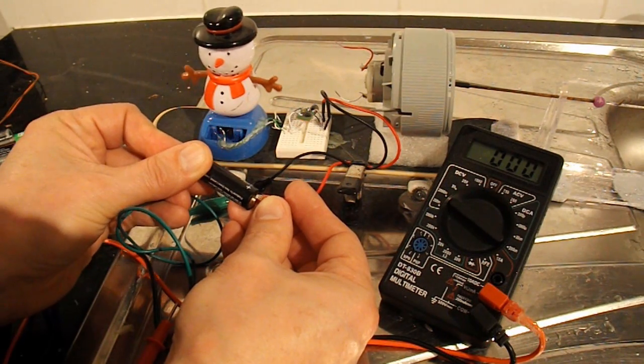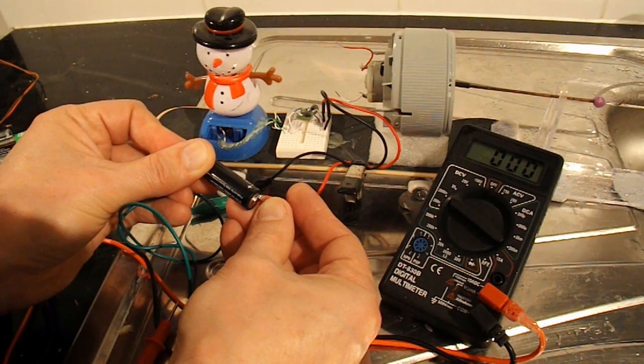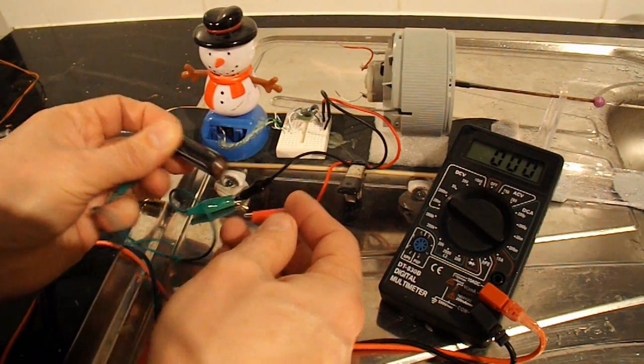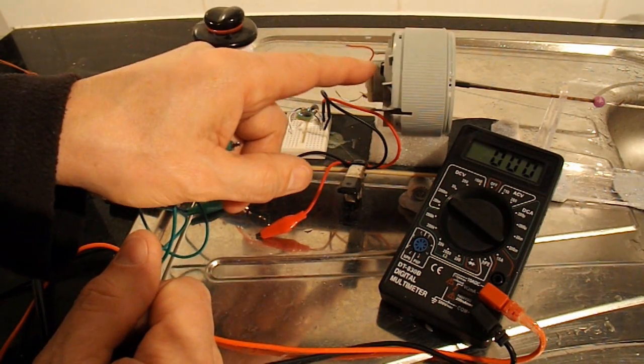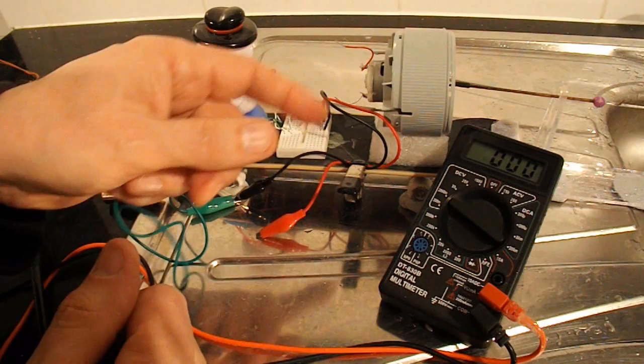So you can see he runs on 0.8 of a volt or 800 millivolts. And he's happy, he can run. But I'm only getting about 200 out of that dynamo electric motor running backwards.